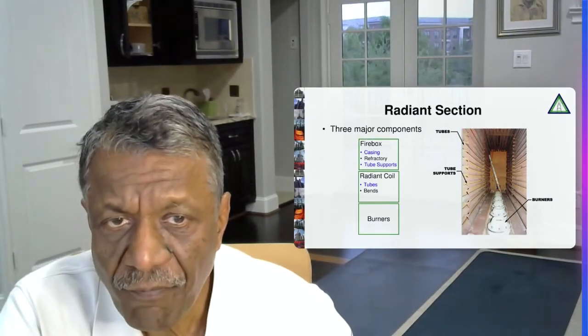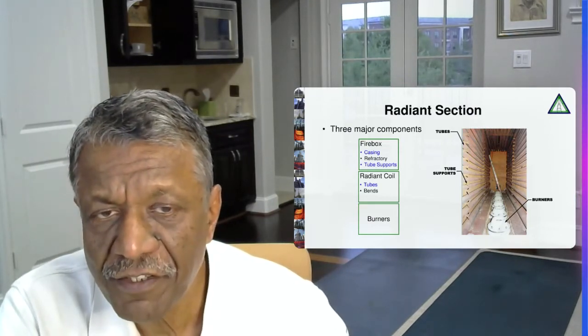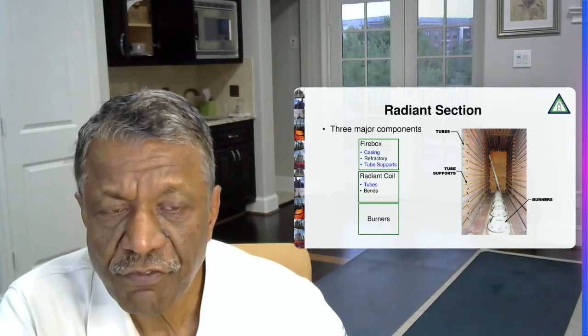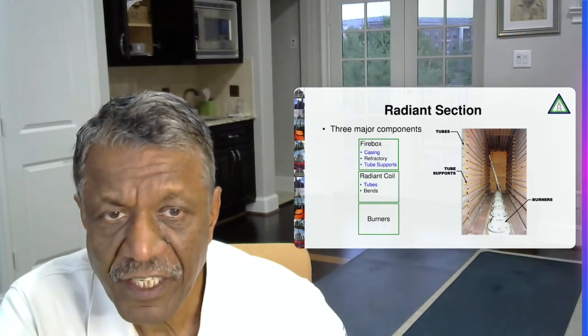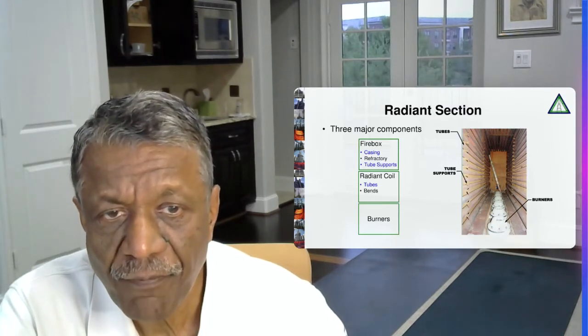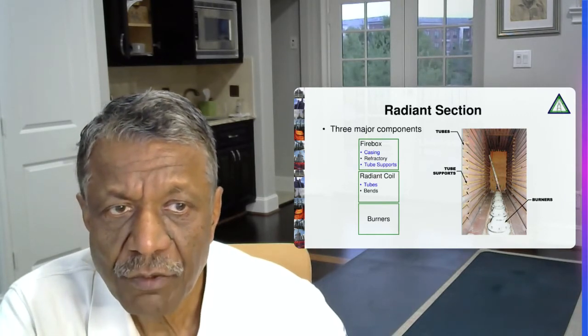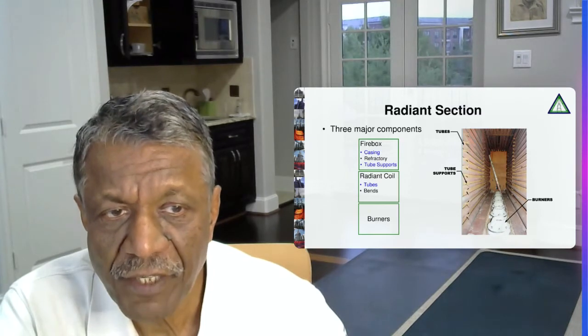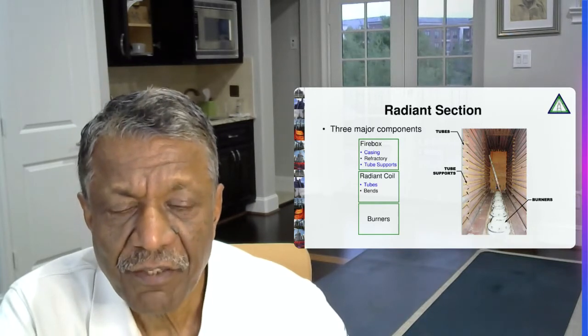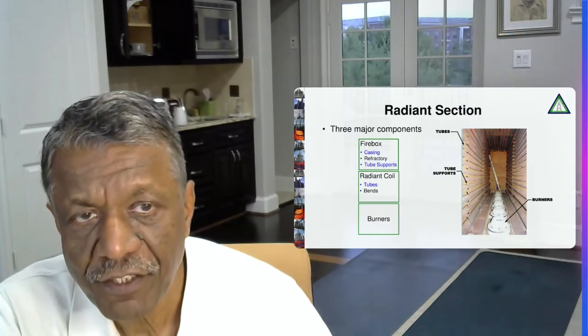When we talk about radiant section, again we can break it up into three sections. We can break up into firebox. Firebox consists of steel casing on the outside, refractory lining which is used for containing the heat losses, minimizing, containing the heat and minimizing the heat losses. And tube supports are used for holding the tubes. And then we have the radiant coil in which the fluid is flowing throughout the radiant section and absorbing heat. And burners located on the floor of the fire heater which are providing the heat to the fluid. So these are the three major components of radiant section.